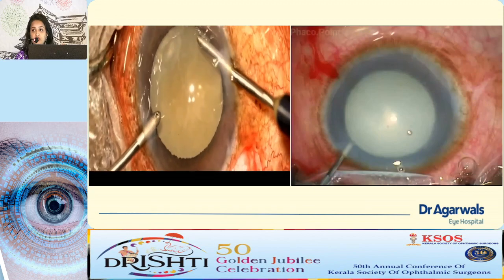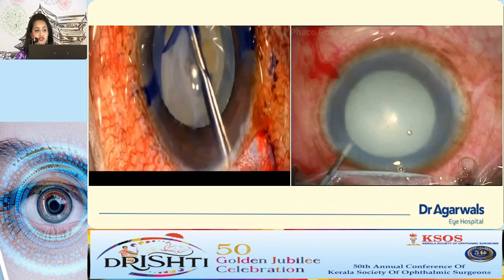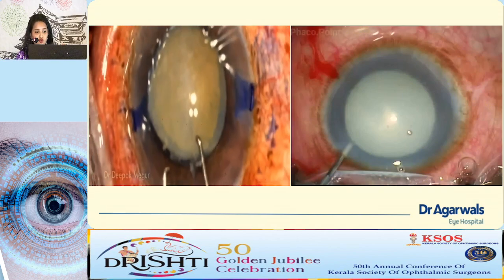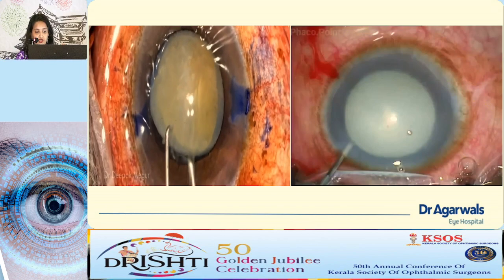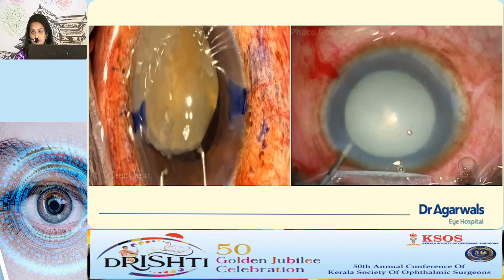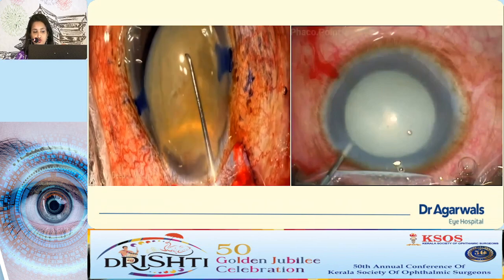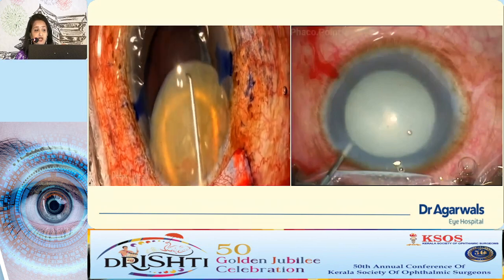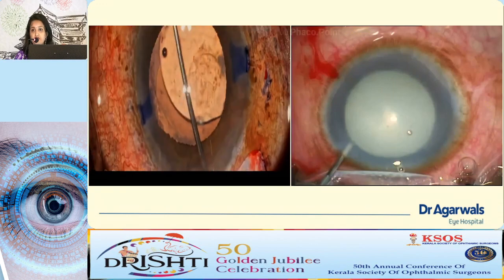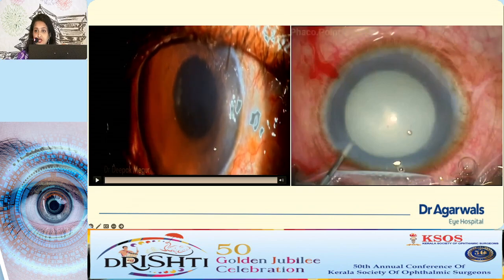In PHACO for such cases, a fibrosed anterior capsule makes proper capsulorhexis difficult — Utrata forceps or capsulorhexis forceps and scissors can help achieve adequate rhexis. Challenges during PHACO include absence of posterior capsular subcapsular plate and cortical matter, making the nucleus wobbly with high chance of posterior capsule engagement. Great care must be taken when creating the initial crack and during last-piece removal, as there is no posterior support. A thorough AC wash must be done before lens implantation.